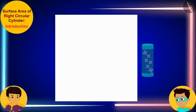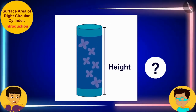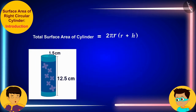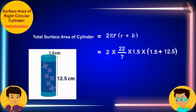Thomas, what will be the height and radius of each of your cylindrical packets? The height of each packet is 12.5 cm and the radius of its base is 1.5 cm. Then, let us now quickly substitute the height of your cylindrical packet, 12.5 cm, and the radius of its base, 1.5 cm, in the formula of the total surface area of the cylinder.